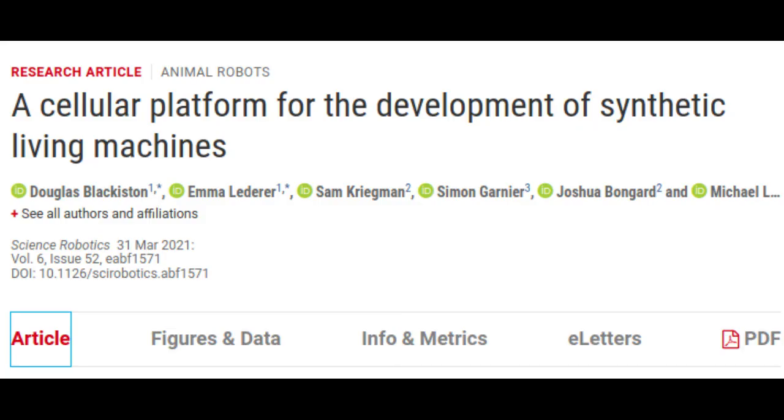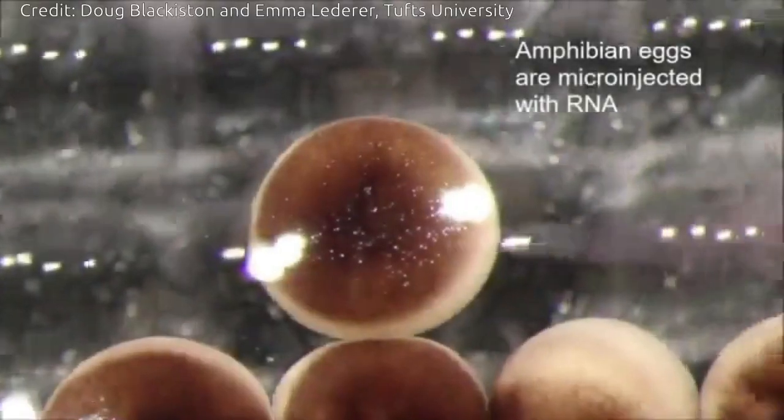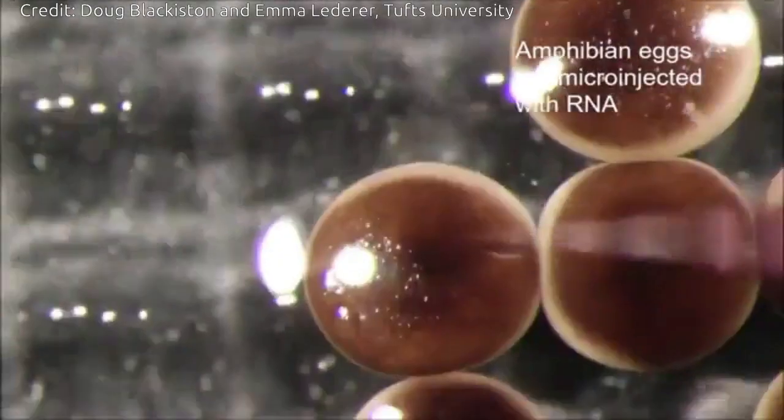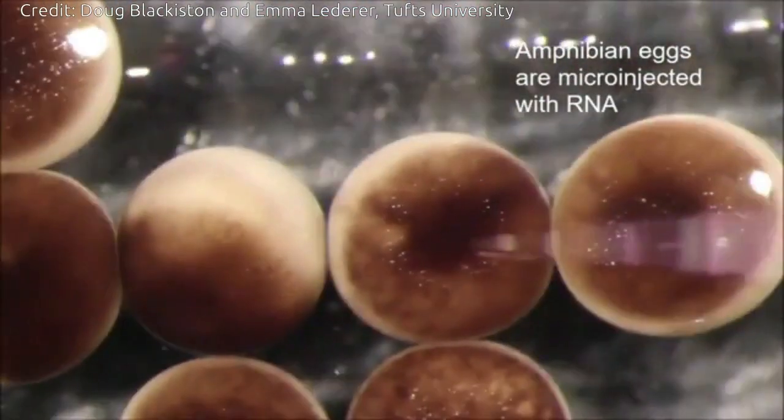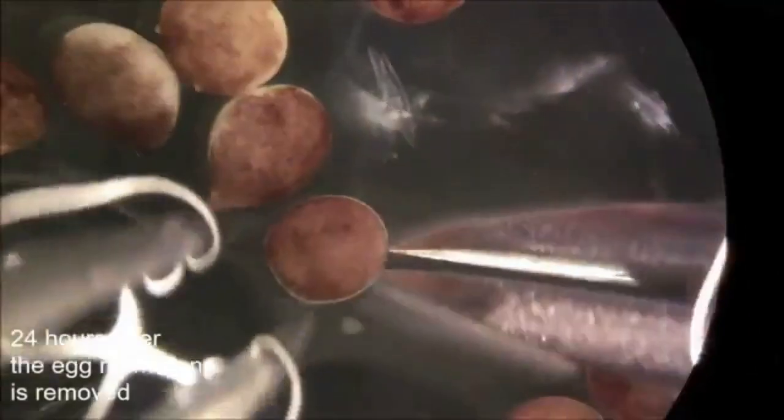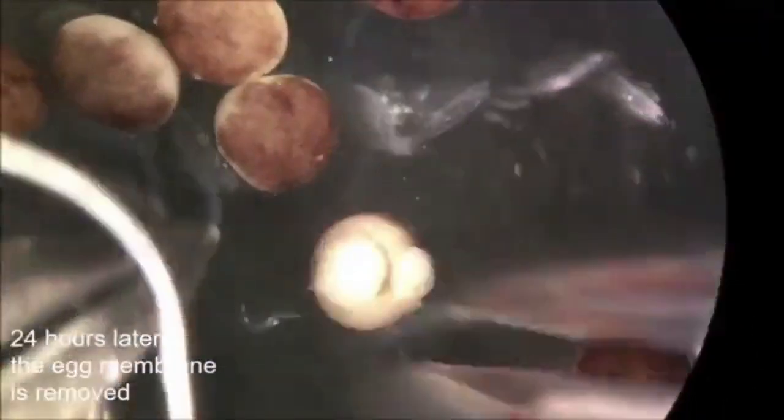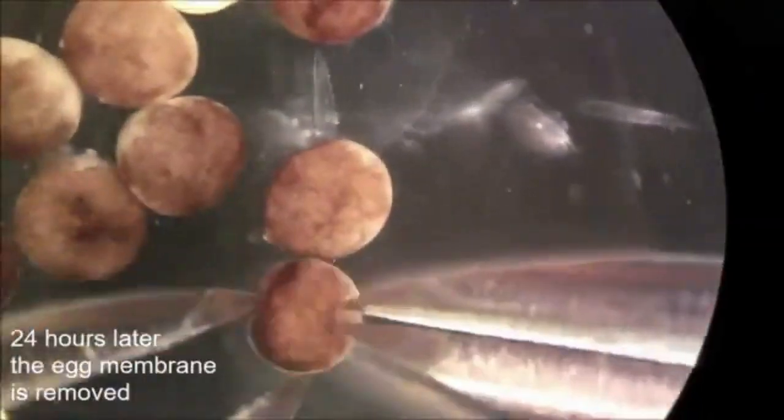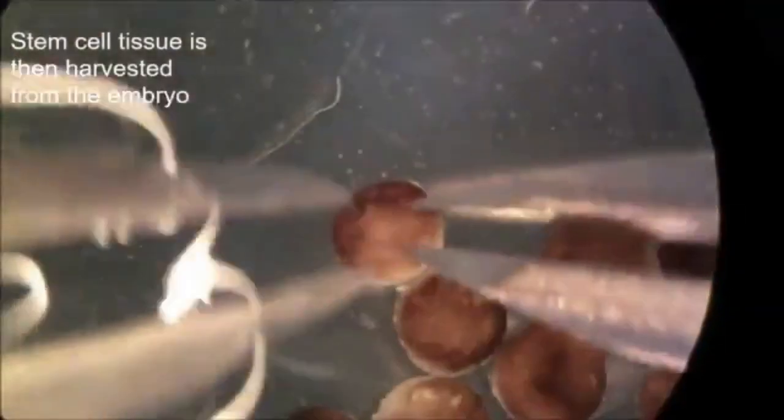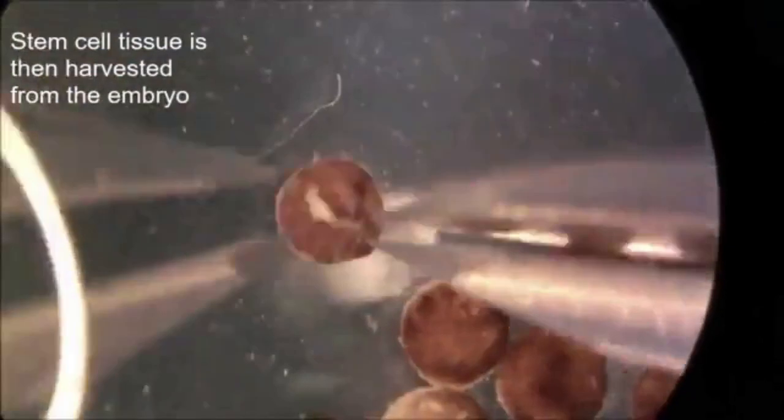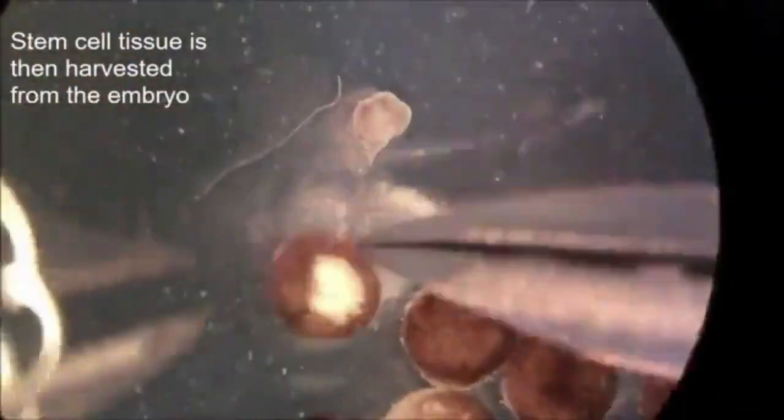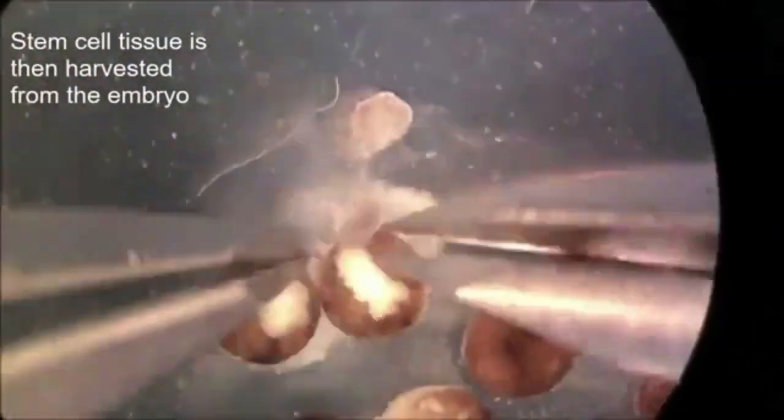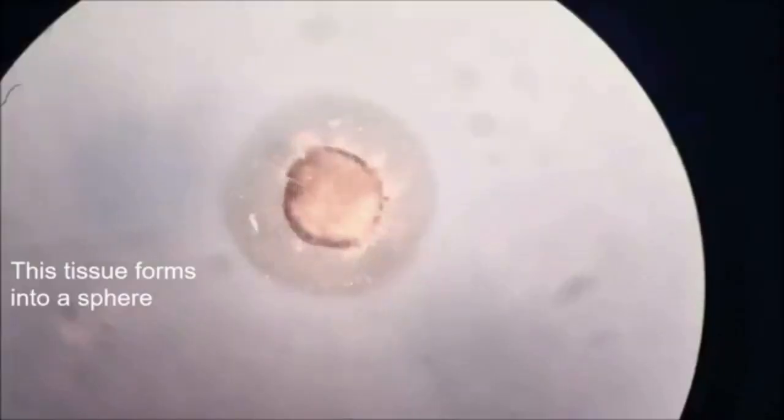Compared to Xenobots 1.0, in which the millimeter-sized automatons were constructed in a top-down approach by manual placement of tissue and surgical shaping of frog skin and cardiac cells to produce motion, the next version of xenobots takes a bottom-up approach. The biologists at Tufts took stem cells from embryos of the African frog, Xenopus laevis,